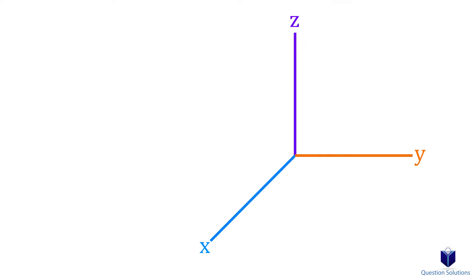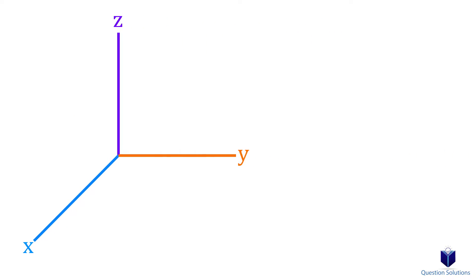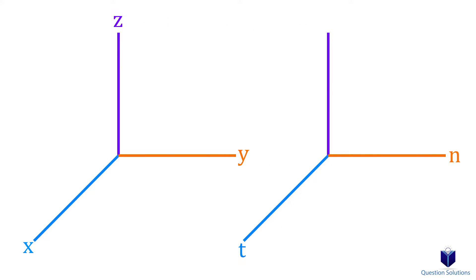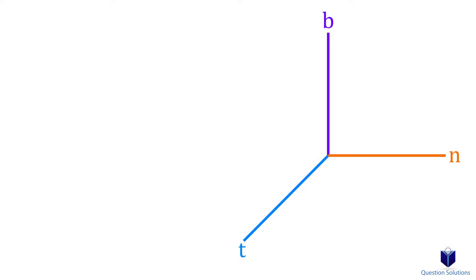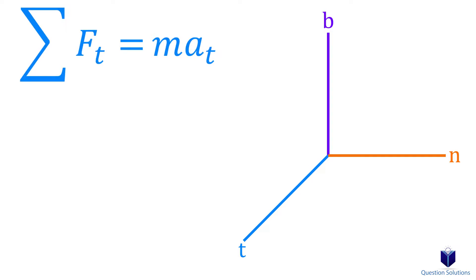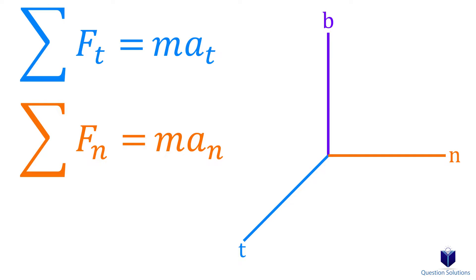In this chapter, instead of those axes, we're looking at tangential, normal, and binormal directions. So instead of x, y, z, we have t, n, and b. We say that forces in the tangential direction added together is equal to mass times tangential acceleration, and forces in the normal direction added together is equal to mass times normal acceleration.